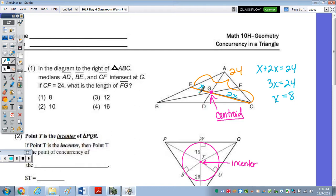So that means FG is 8, and 2 times 8, GC is 16. So the correct answer, what is the length of FG? FG is 8.